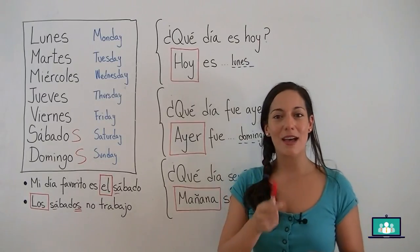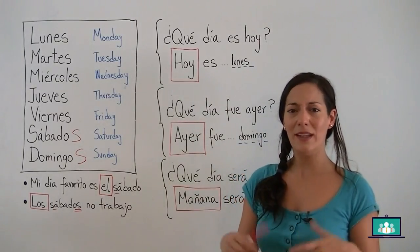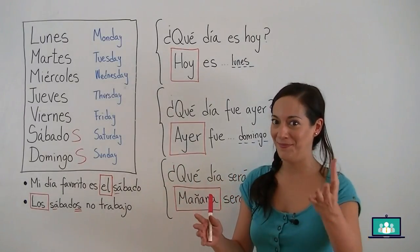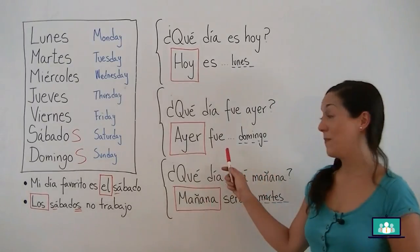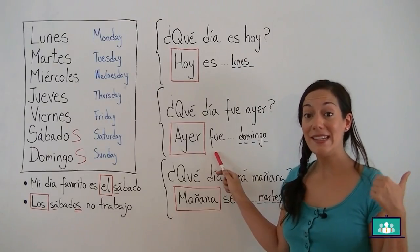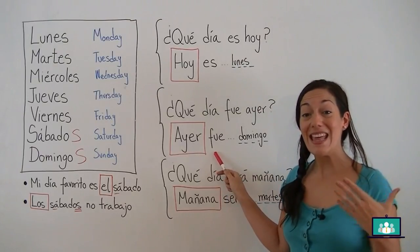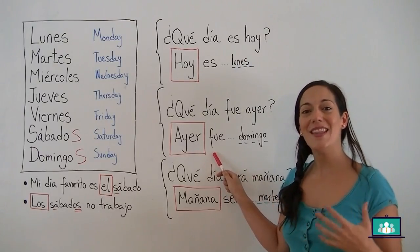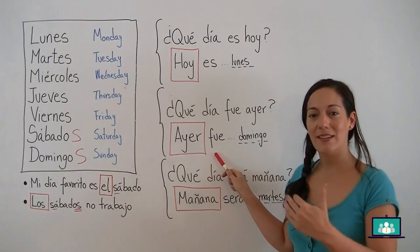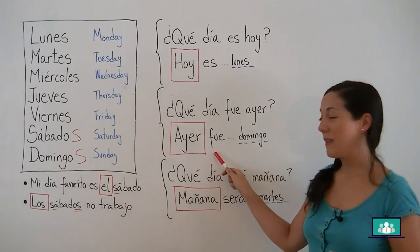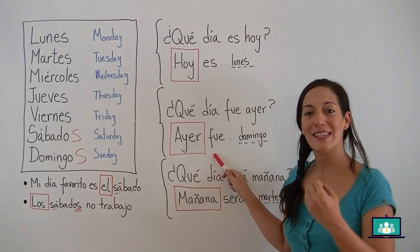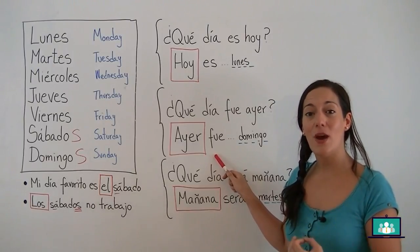If you want to ask, what day was it yesterday? ¿Qué día fue ayer? Ayer — yesterday. And the answer will be: ayer, fue, and the day. For example, ayer fue domingo. Yesterday was Sunday. Ayer fue domingo.